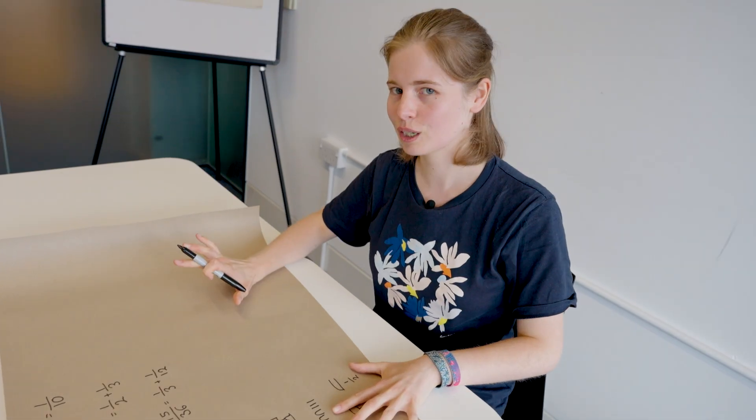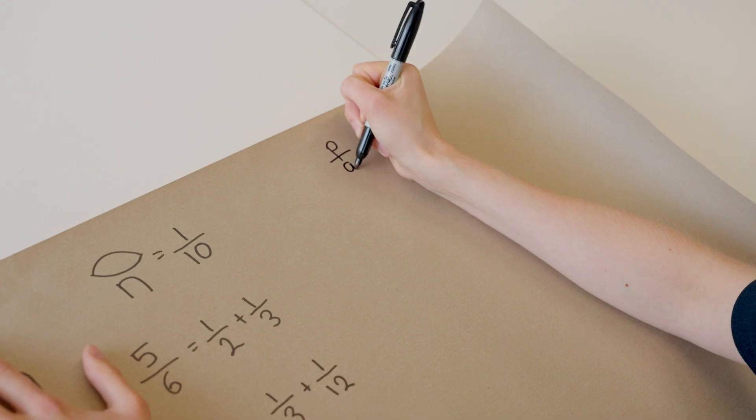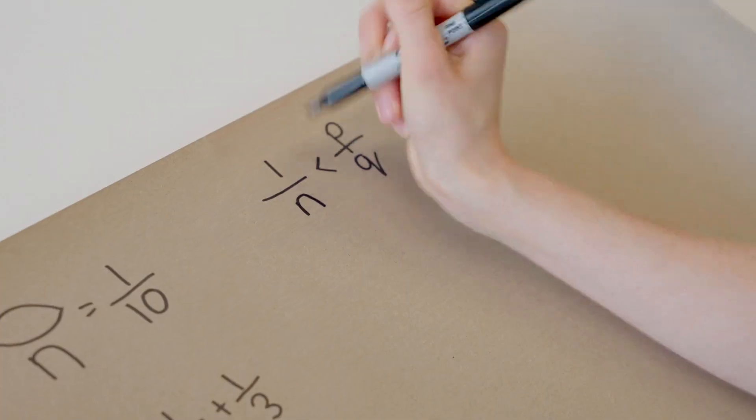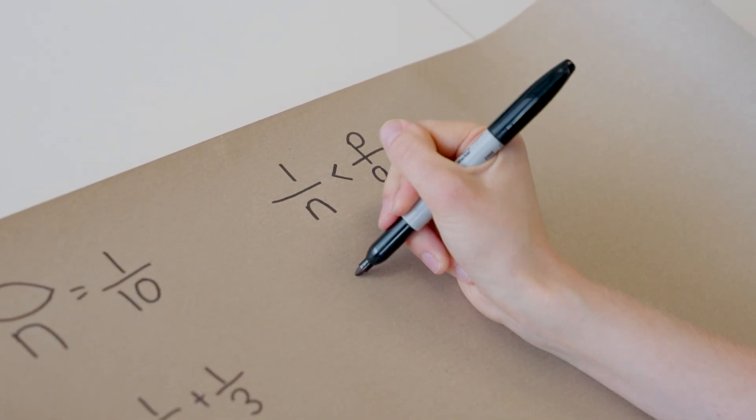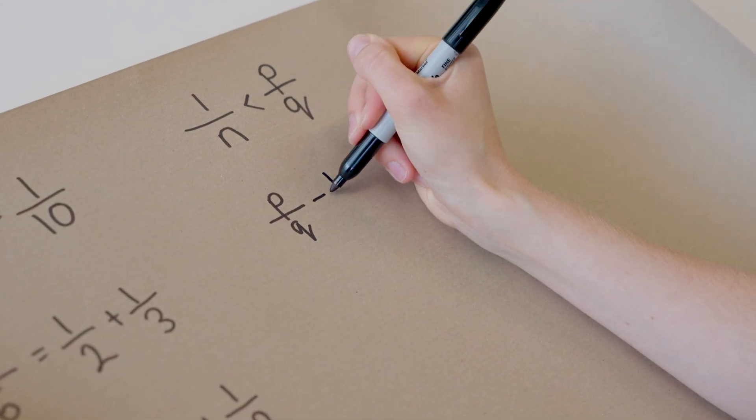So for this, I want to introduce you to the greedy algorithm. We've got our fraction p over q. And we're going to say p is not one, because we know if p is one, we can do it. We'll just write it as is. And the greedy algorithm looks at the largest one over n, such that one over n is less than p over q. And we start by just taking away this one over n.